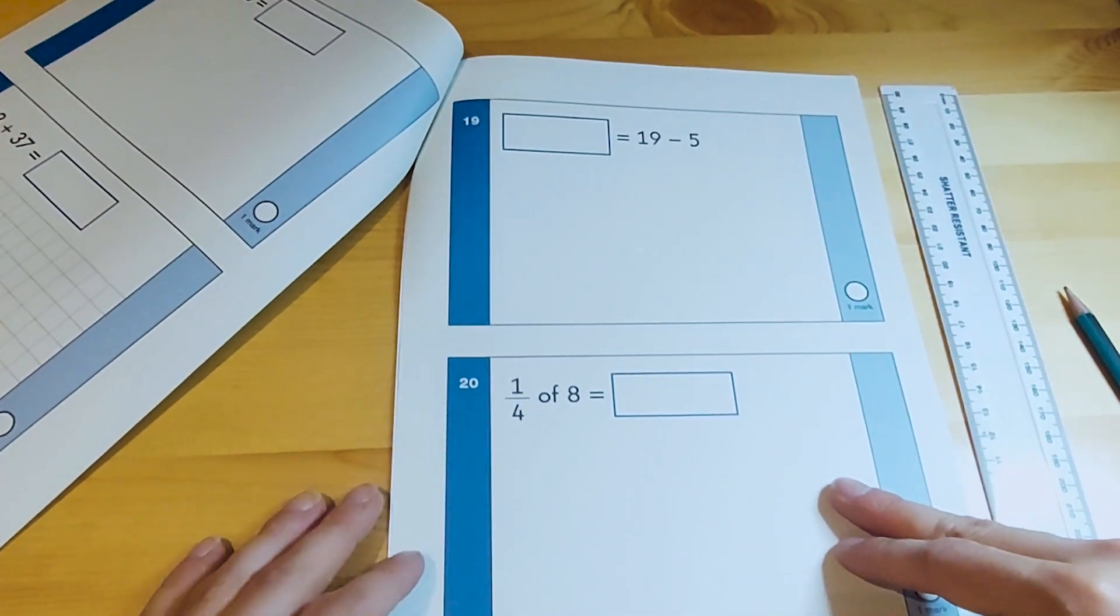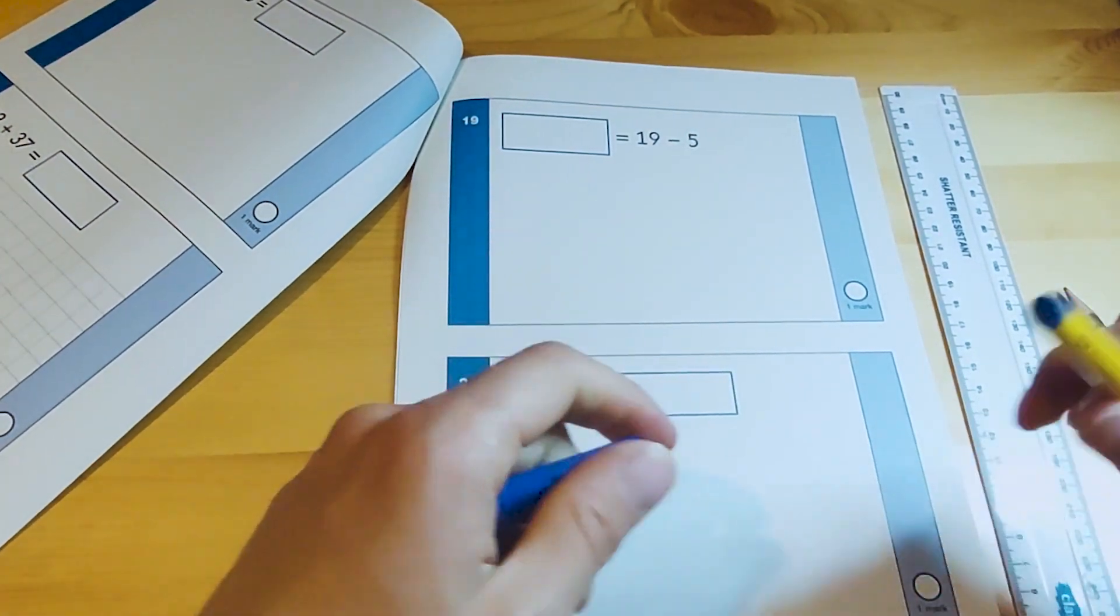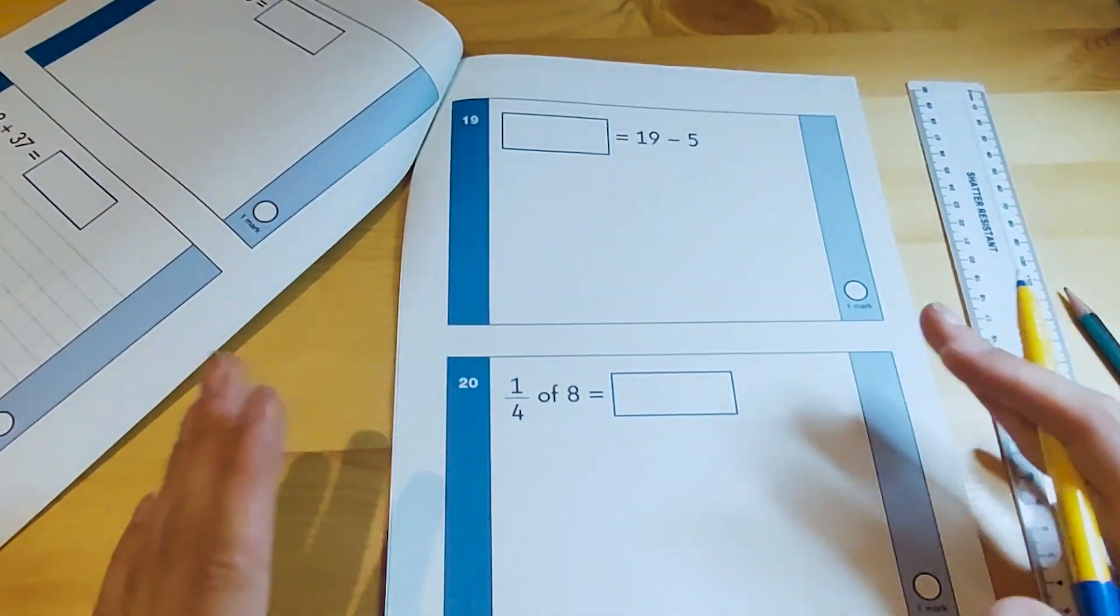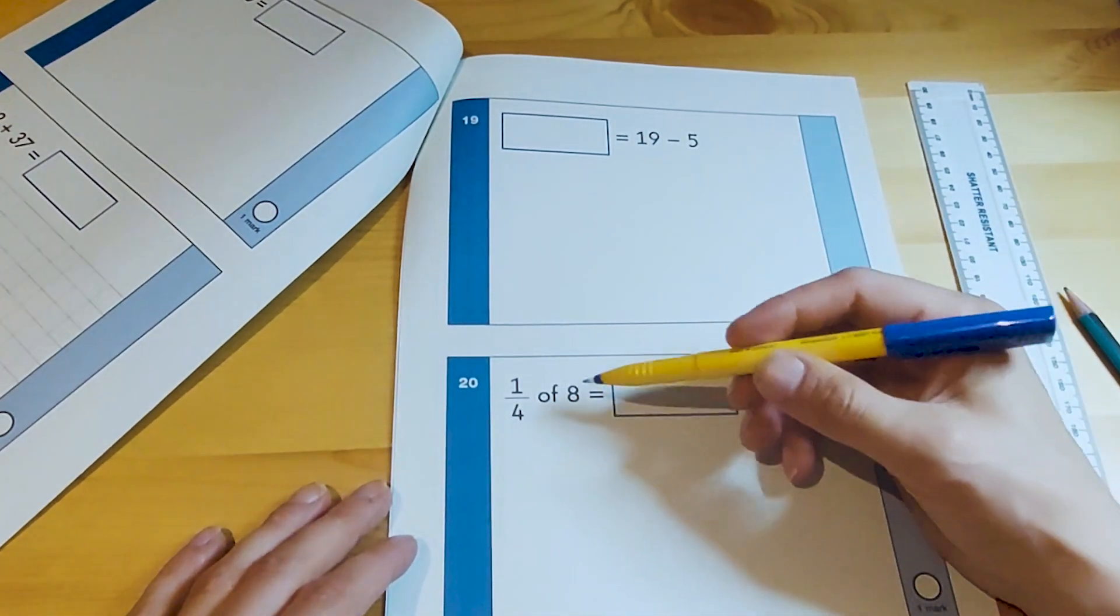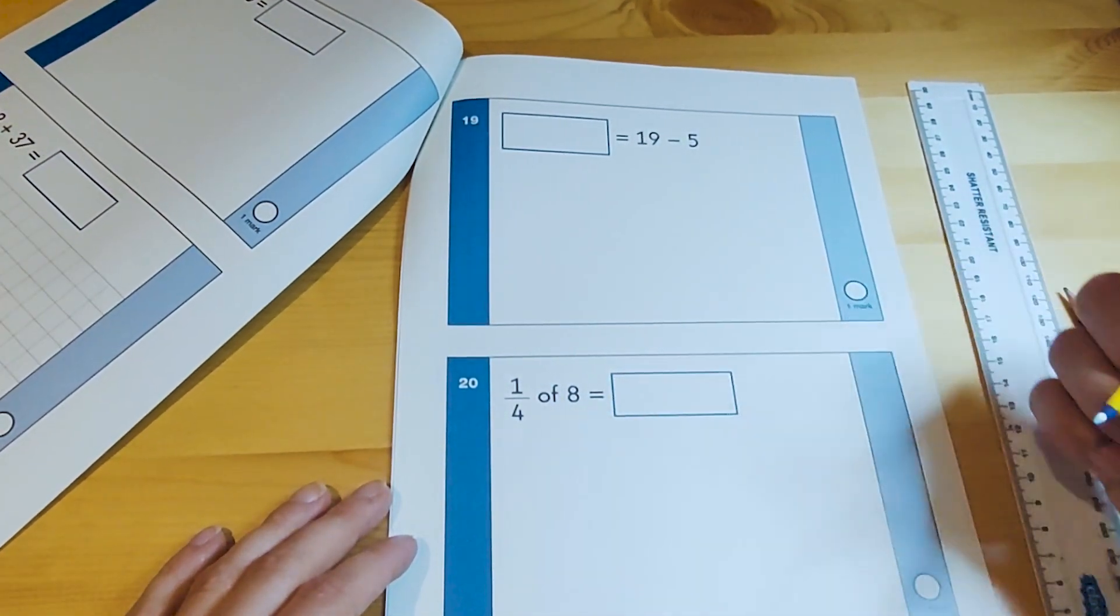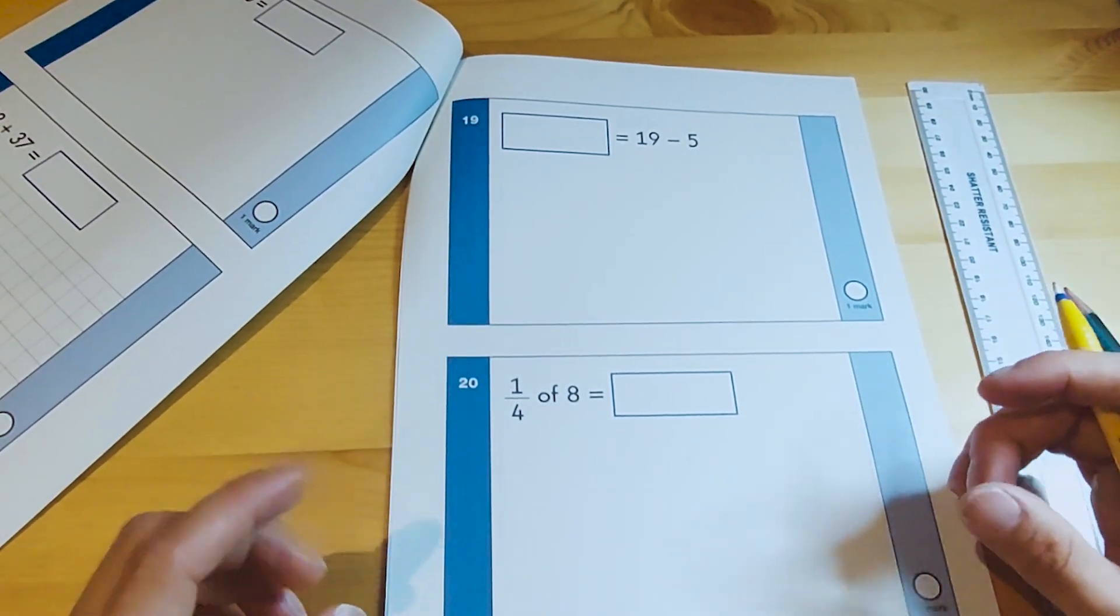The first one that we see is on this page. We've got this question here: a quarter of 8. Now in Year 2, the children are just getting used to the concept of fractions. We're looking to make 8 into four parts and then count how many parts one of those parts is.